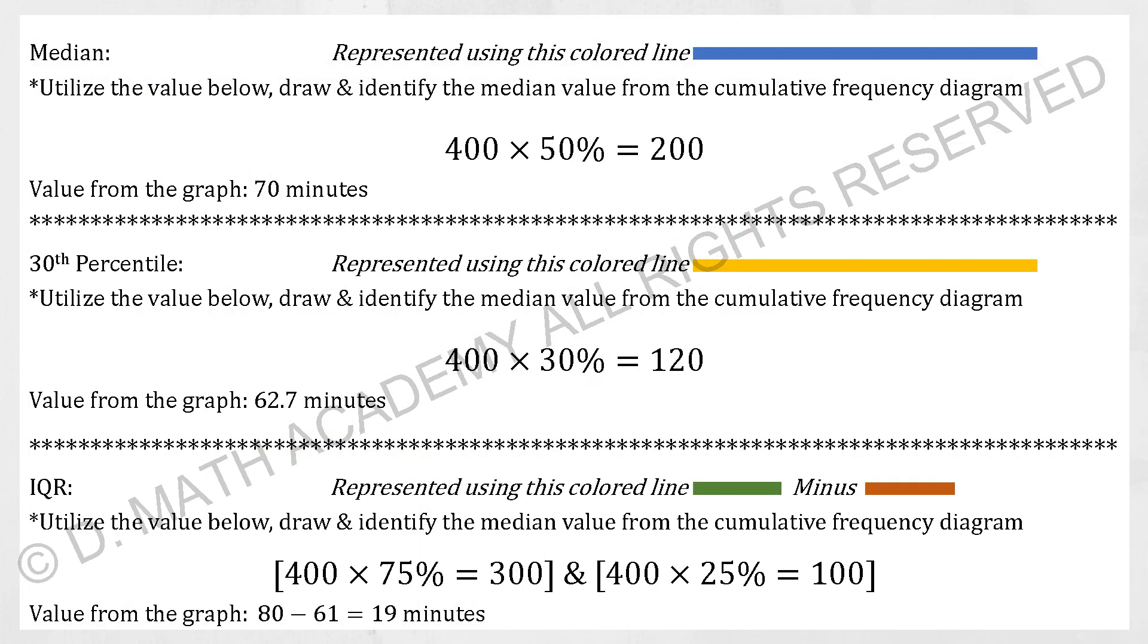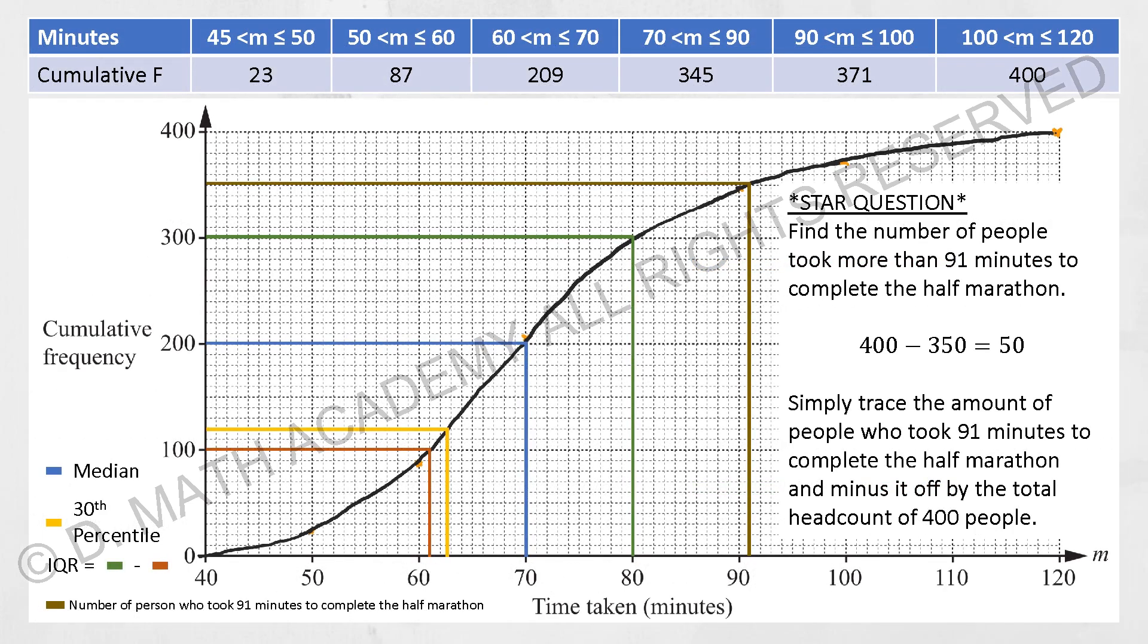So for the first one, we have median over there, which is represented using a blue line. What I did was to take 400 times 50%, I get 200. So from the cumulative frequency diagram, you trace it back. Your results should be 70 minutes for the median value.